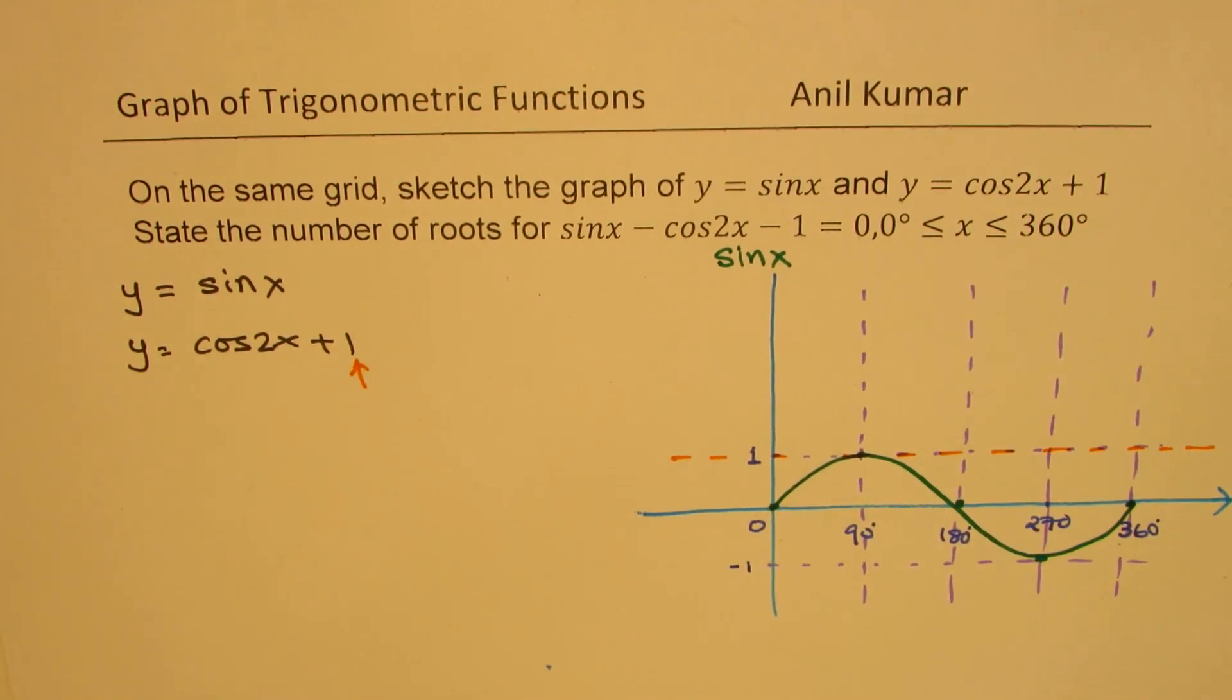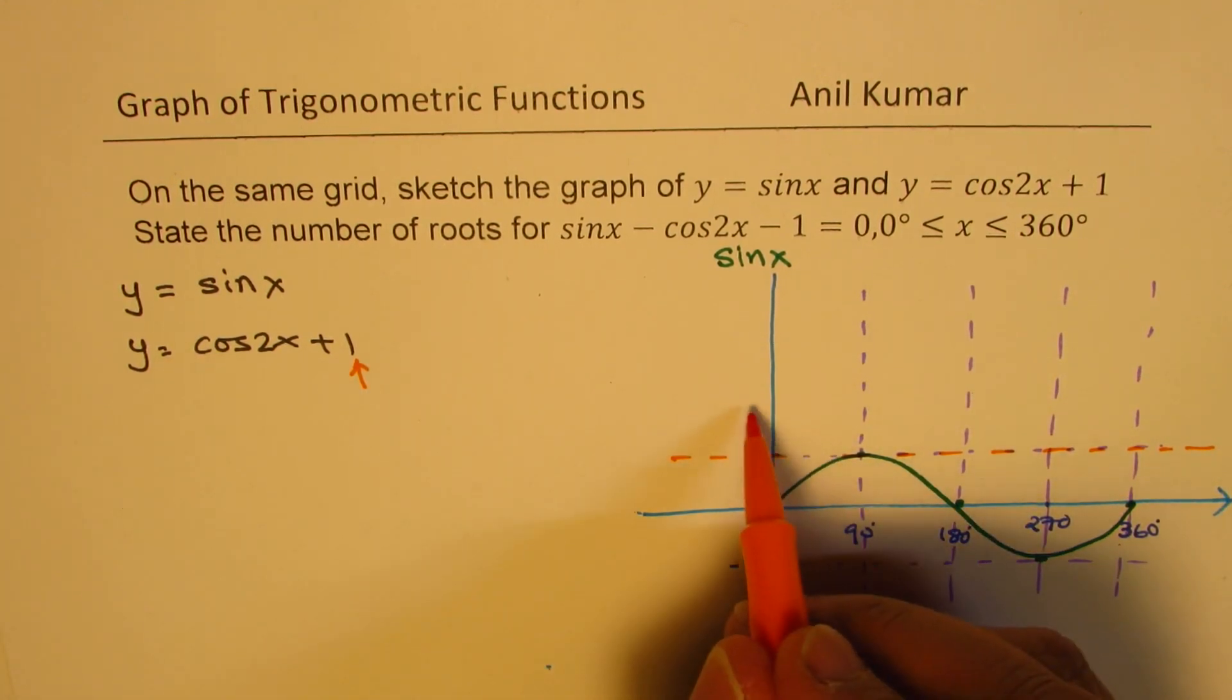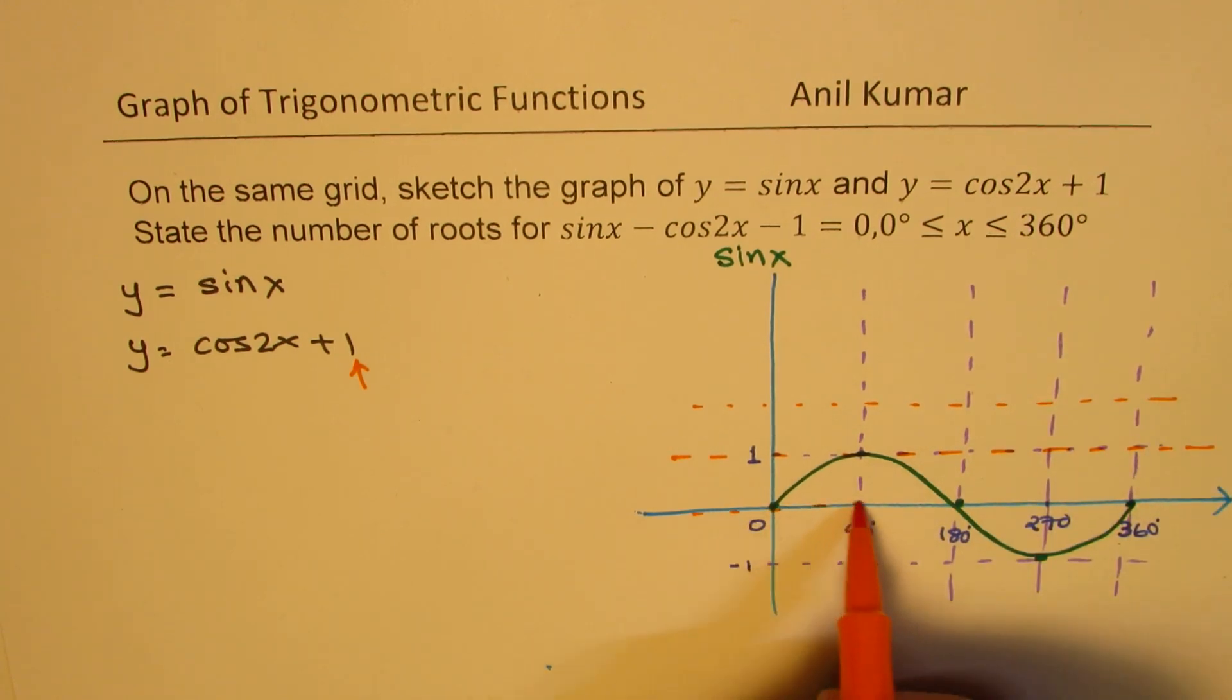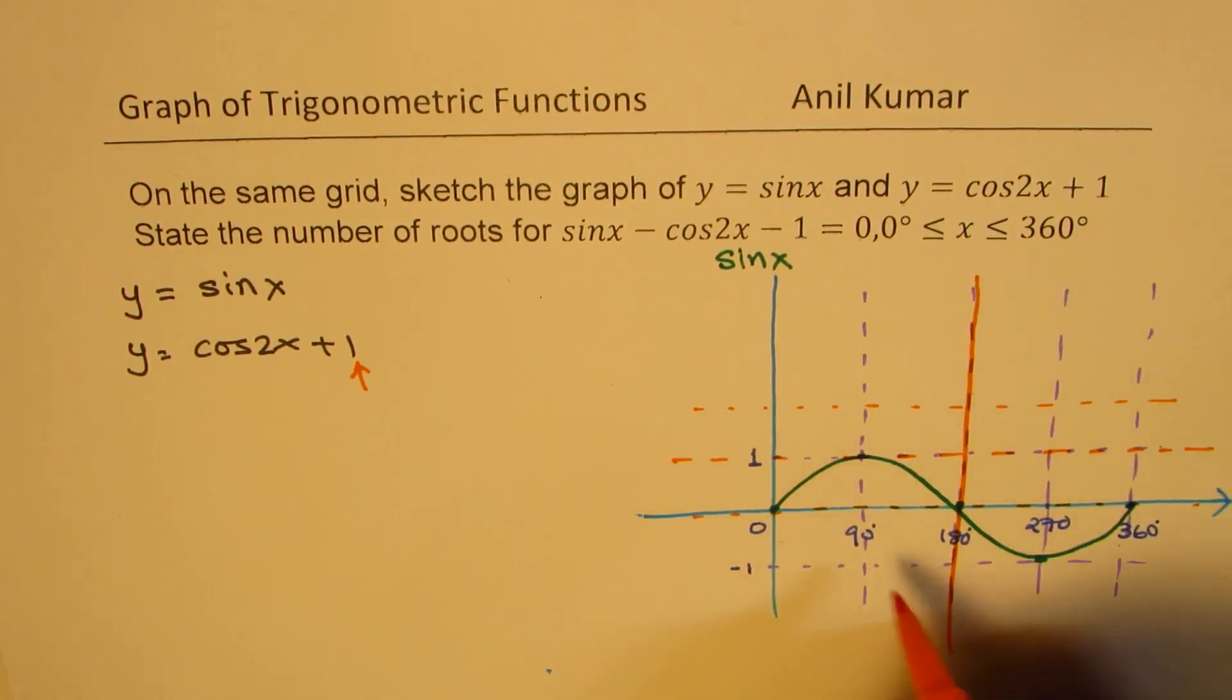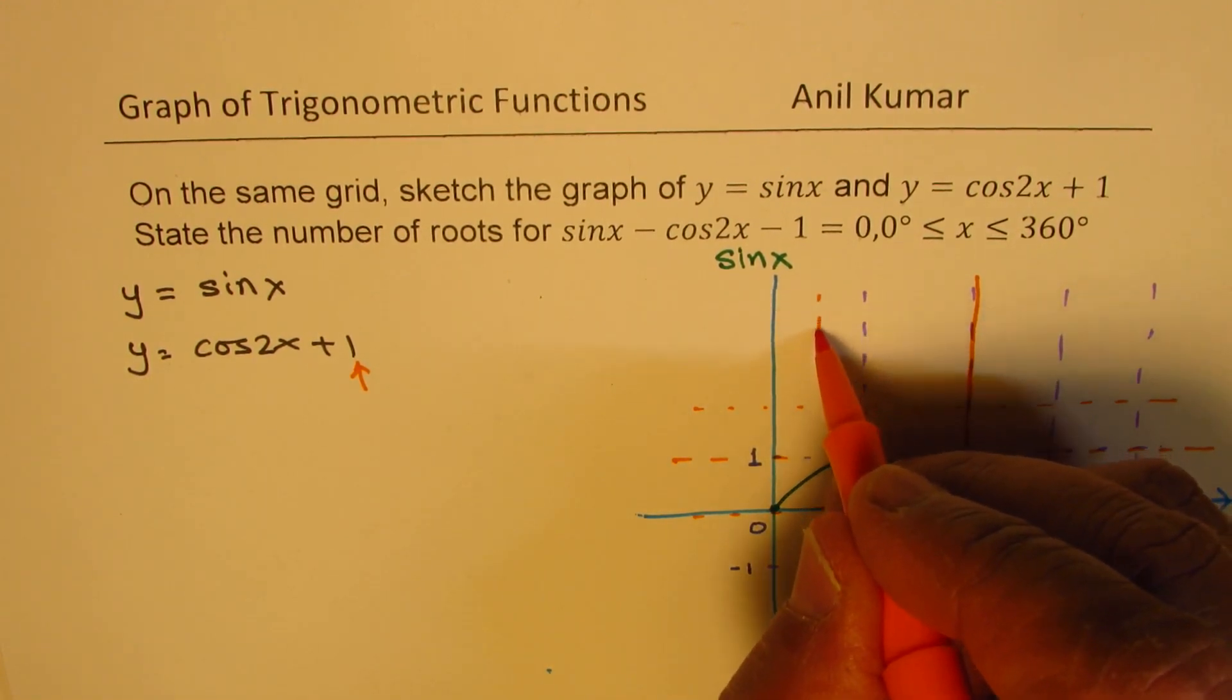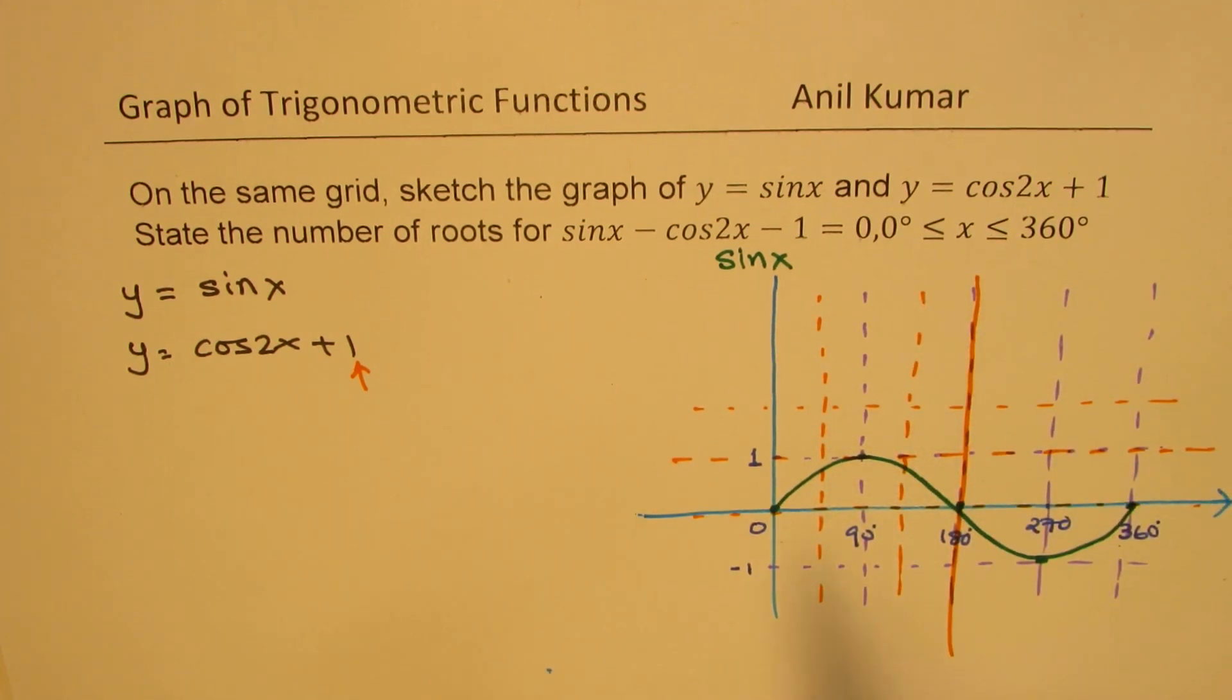Now, cos 2x means what? It really means that there will be two cosine functions within this interval of 0 to 360. Amplitude is 1. So that means the maximum will be somewhere here, and the minimum will be along the x-axis. Now, we will have one wave within time period of 180. To sketch this wave, I should divide this also into four equal parts, signifying the coordinates.